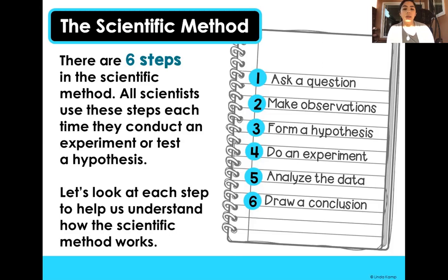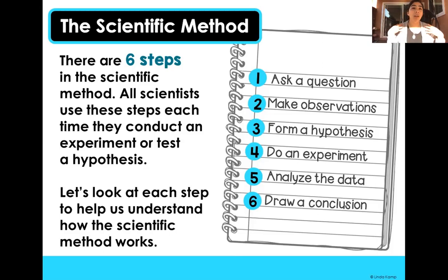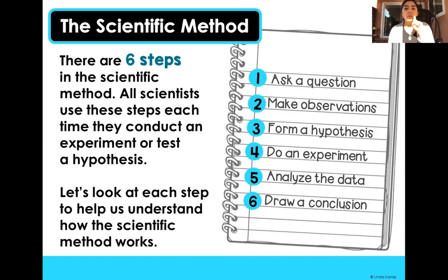Let's look at each step to help us understand how the scientific method works. The first step — the very first thing you do when trying to do an experiment — is that you have to ask a question. You have to be wanting to know something, and when you want to know something, you ask questions. So the first step is: ask a question.